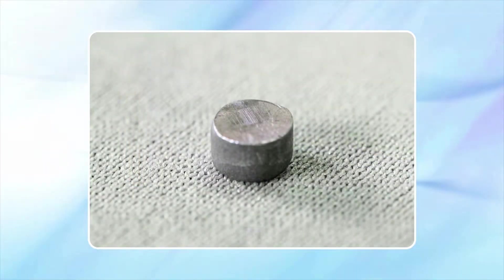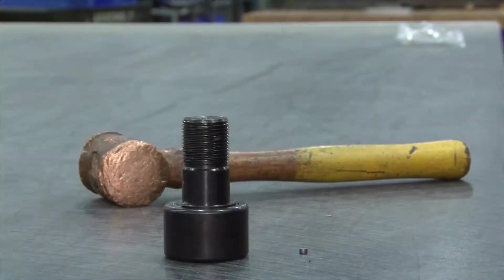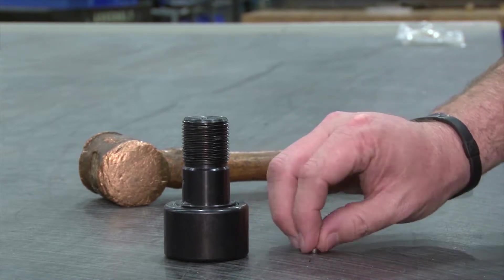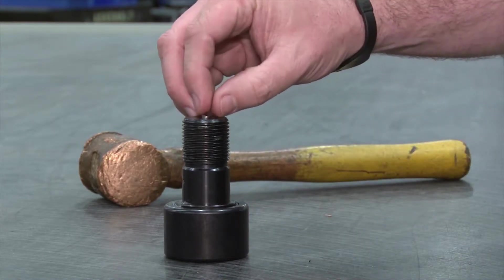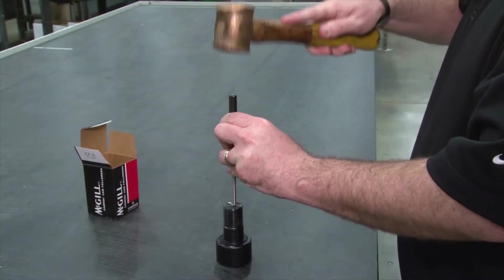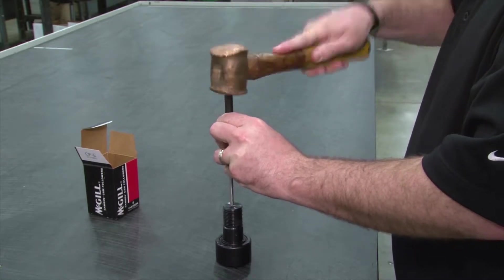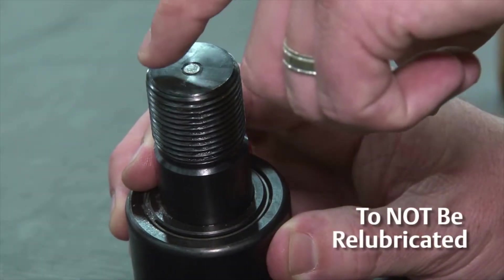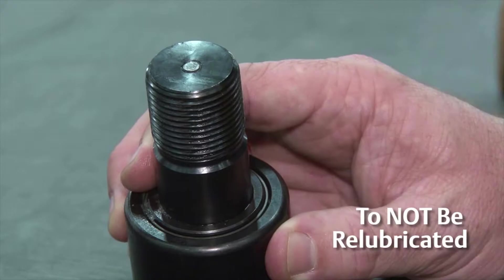Do install the oil hole plug in applications where the bearing will not be re-lubricated. Installing the plug helps protect the bearing from contaminant entry such as fine grit, metal dust or liquids, promoting longer operating life.